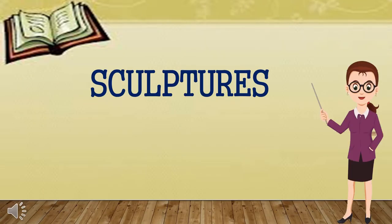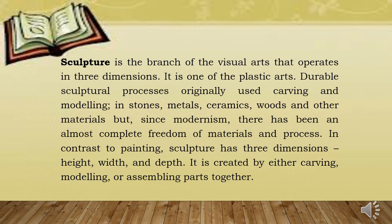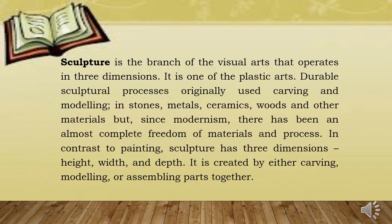Another form of visual art is sculpture. Sculpture is the branch of the visual arts that operates in three dimensions. It is one of the plastic arts. Durable sculptural processes originally used carving and modeling in stones, metals, ceramics, woods, and other materials. But since modernism, there has been an almost complete freedom of materials and processes. In contrast to painting, sculpture has three dimensions: height, width, and depth. It is created by either carving, modeling, or assembling parts together.